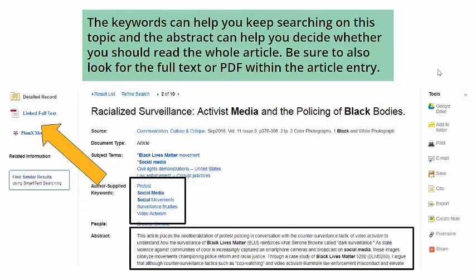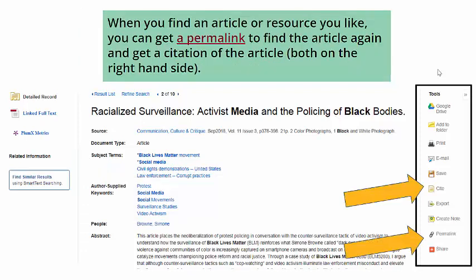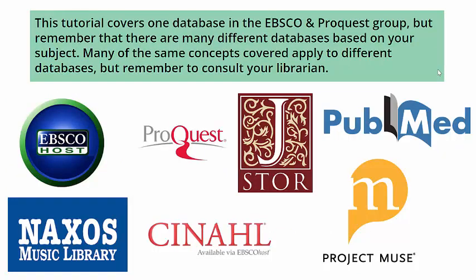Keywords can help you keep searching on topic, and the abstract can help you decide whether you should read the whole article. Be sure to look for the full text or PDF within the article entry. When you find an article or resource you like, you can get a permalink to find the article again and get a citation of the article, both on the right-hand side.